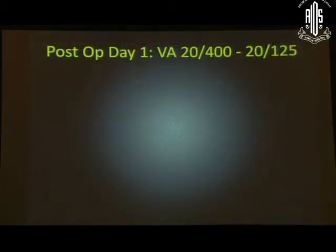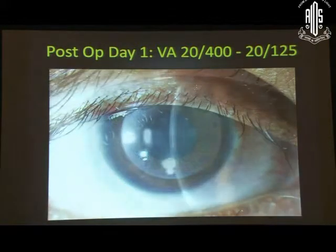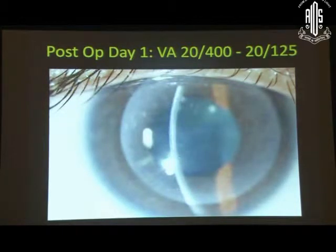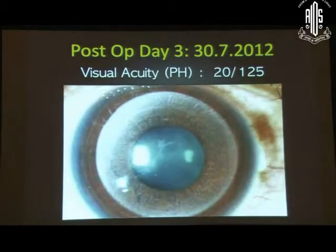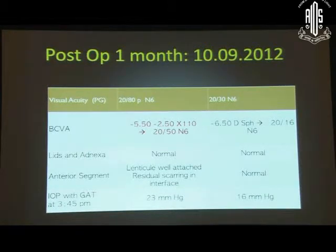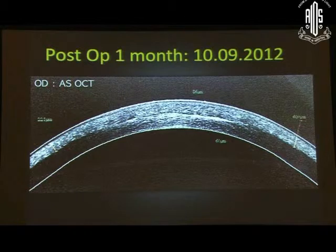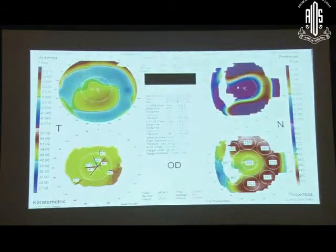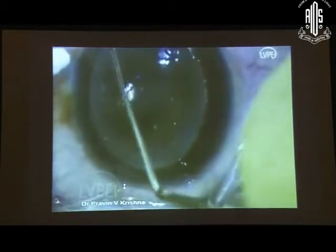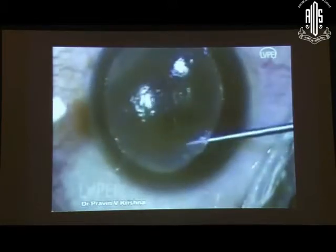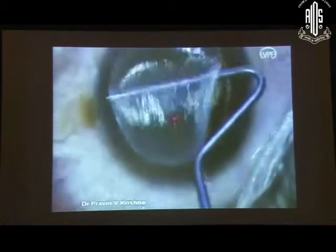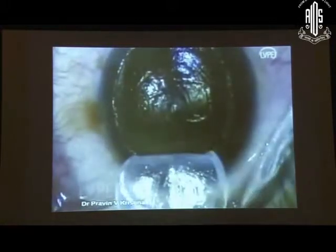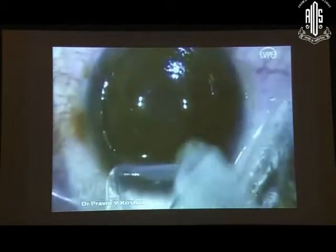The problem was that she did not have a significant improvement in visual acuity, as she still had some residual scarring in the interface. Even by post-op day 3 and over one month, her best corrected visual acuity was only 20/50 — so we had not achieved a functional improvement despite removing the anterior stromal scar. The OCT showed residual scar in the posterior and mid stroma with the transplanted lenticule in the anterior stroma. We decided to wait, and later lifted the lenticule like a LASIK flap, performed PTK to smoothen the irregular bed, and did a 30-micron PTK to address the residual mid-stromal scar.